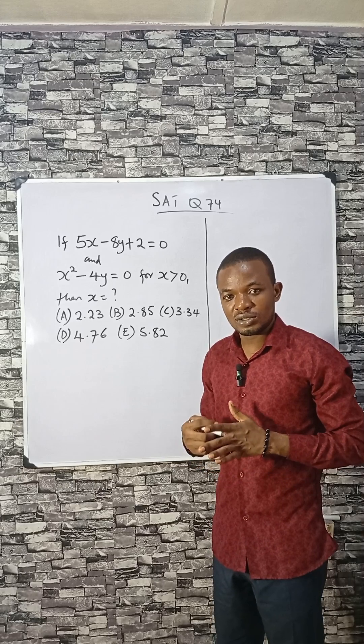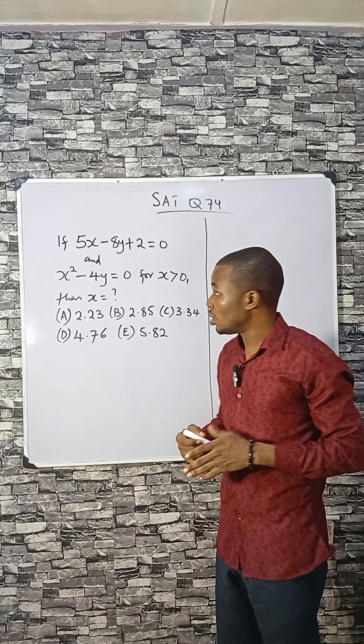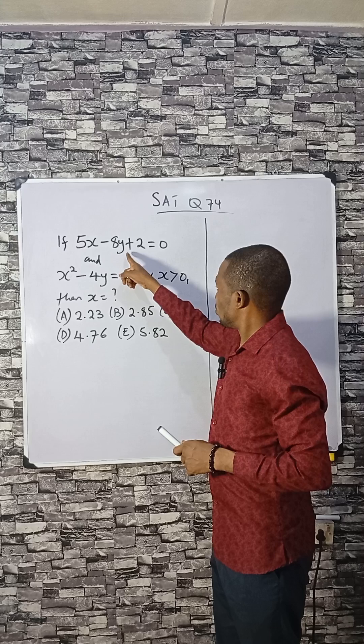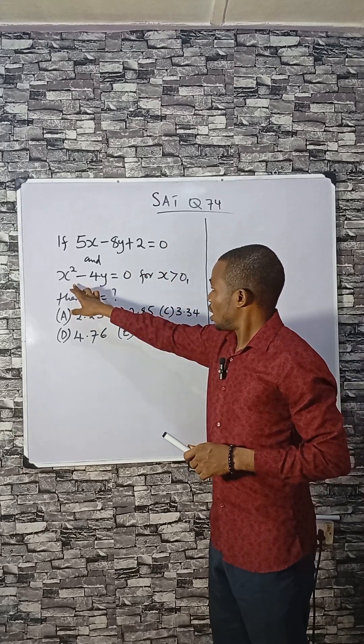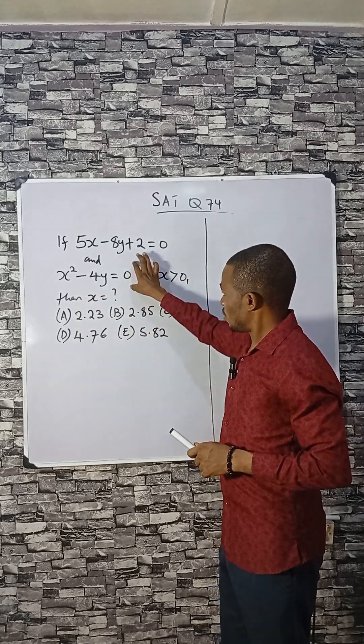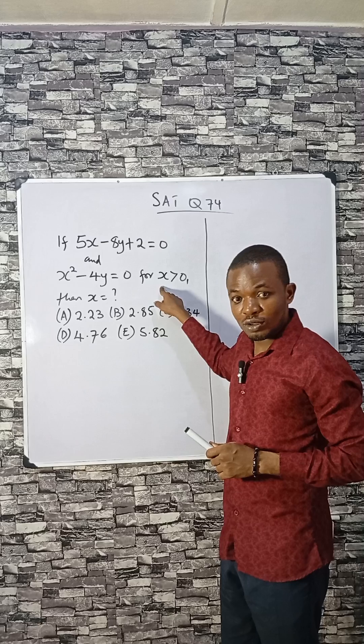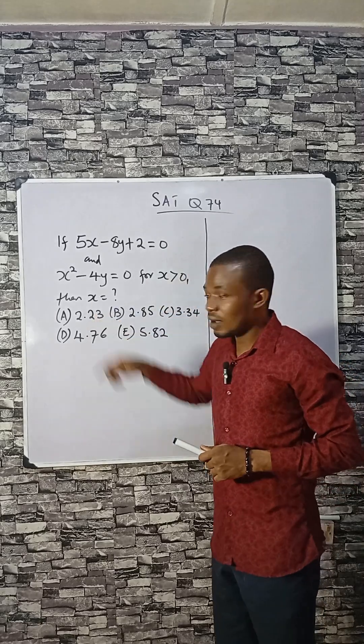This is an interesting SAT question. It's very tactical, but let's do it together. If 5x - 8y + 2 = 0 and x² - 4y = 0 for values of x greater than 0, what is the value of x?